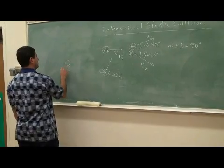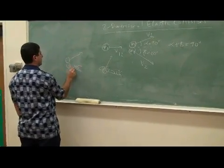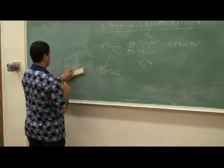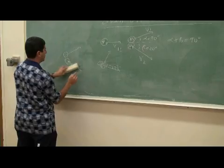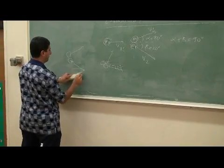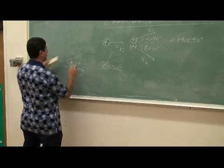But what if the two objects hit and this is 45 degrees? What's the angle of the other one going to be?